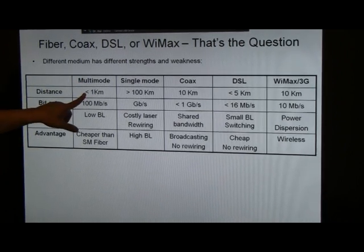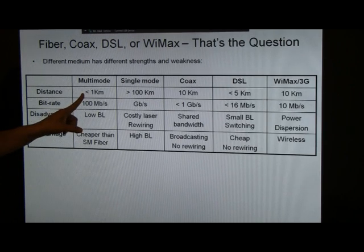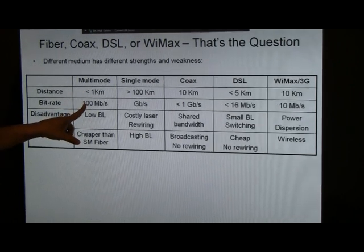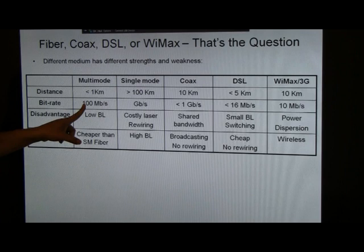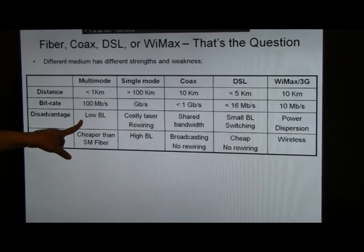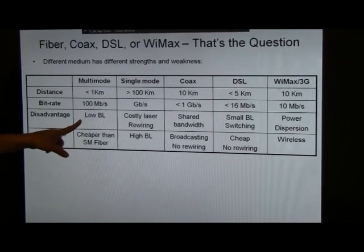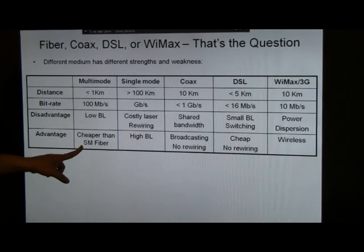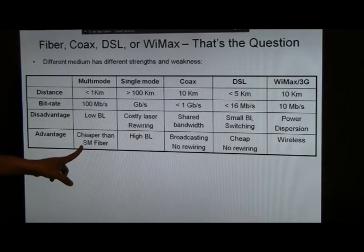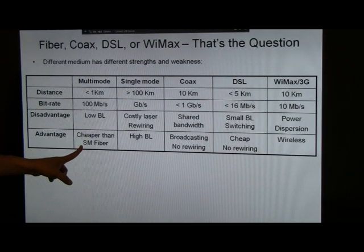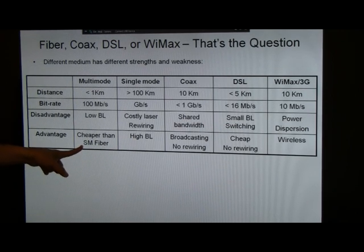For multi-mode, you don't want to go much longer than one kilometer for data rate that is much bigger than 100 megabits per second. The disadvantage is very low BL product. But on the other hand, it's much cheaper than single-mode fiber because you only need to use LED, and the receiver design is much simpler.